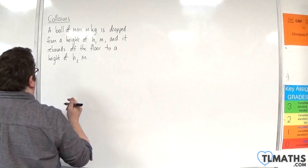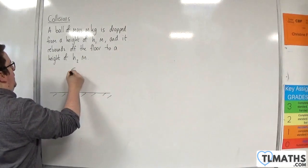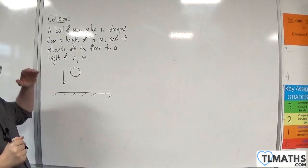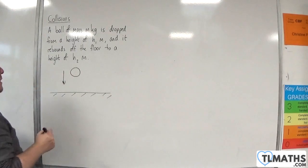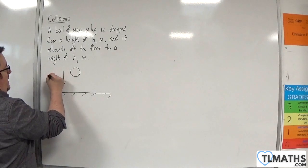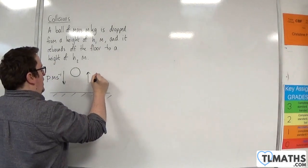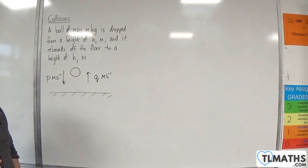So let's draw a diagram so we can visualize what's going on. Here's the floor and the ball is dropped from rest. And it's going to hit the ground with a speed of let's say p metres per second. And then it rebounds at a speed of q metres per second up to its height of h2.